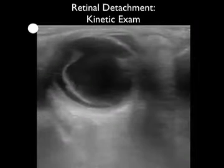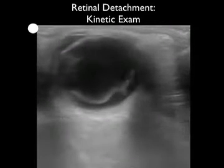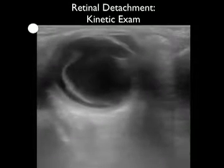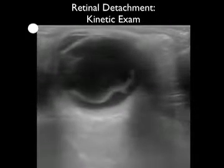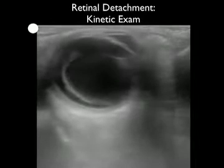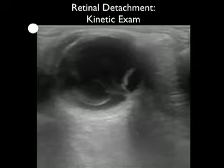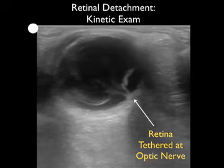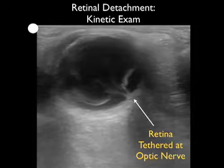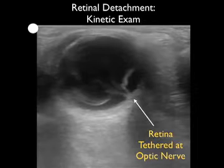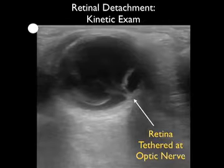Here's another kinetic exam of a retinal detachment. We can see the tethered membrane appearance of the detached retina moving as the patient looks from side to side. It has a classic V-shape that tethers in at the optic nerve sheath. Stilling that image, we see the optic nerve posteriorly and the detached retina tethered there, forming a V coming anteriorly into the vitreous. The classic appearance of retinal detachment on kinetic examination is always tethered at the optic nerve.